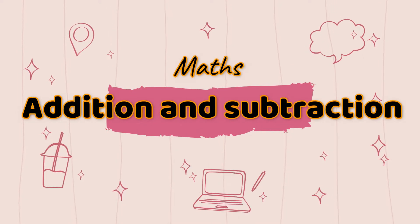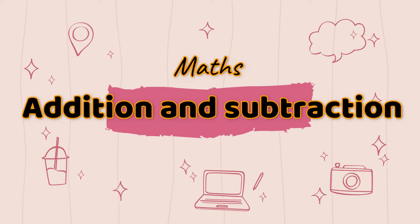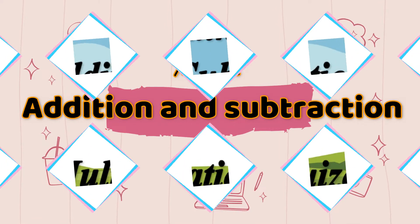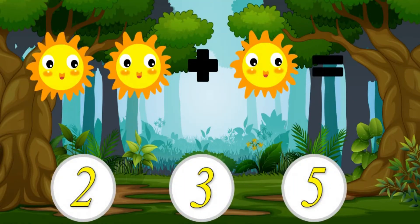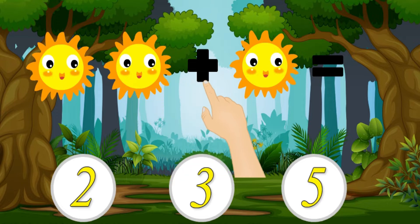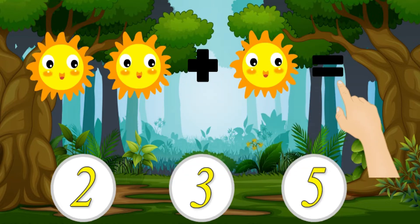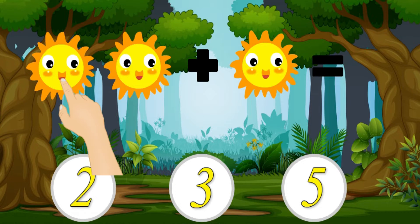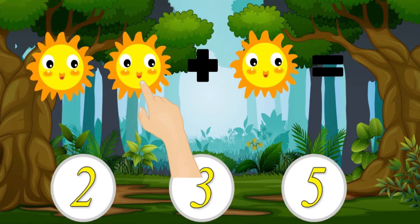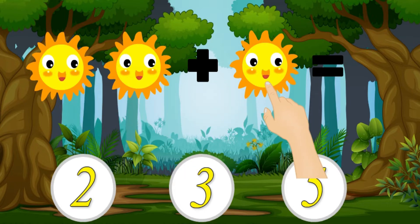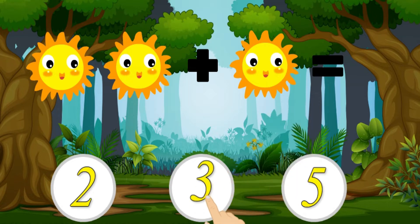Maths Addition and Subtraction. Let's start: 2 plus 1 is equal. Now let's count together: 1, 2, and 3. 3 is the right answer. There are 3 suns.